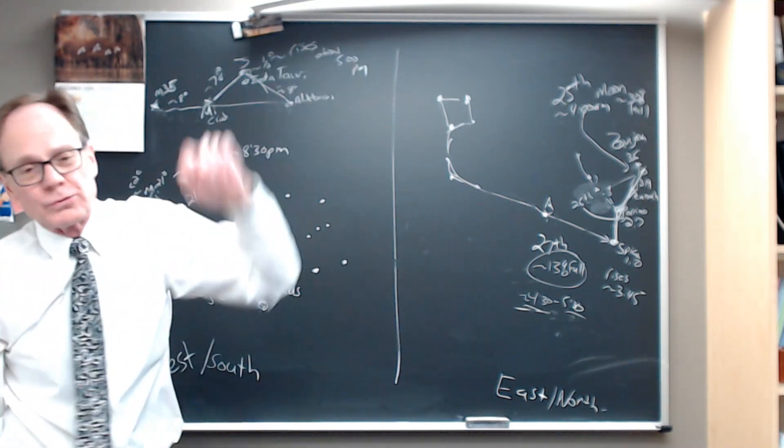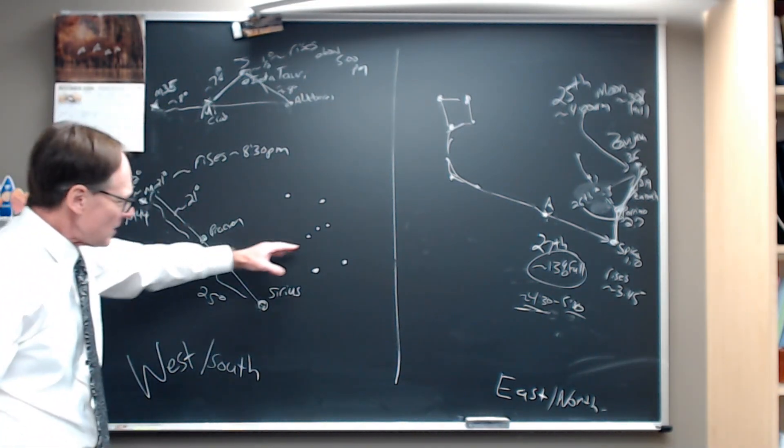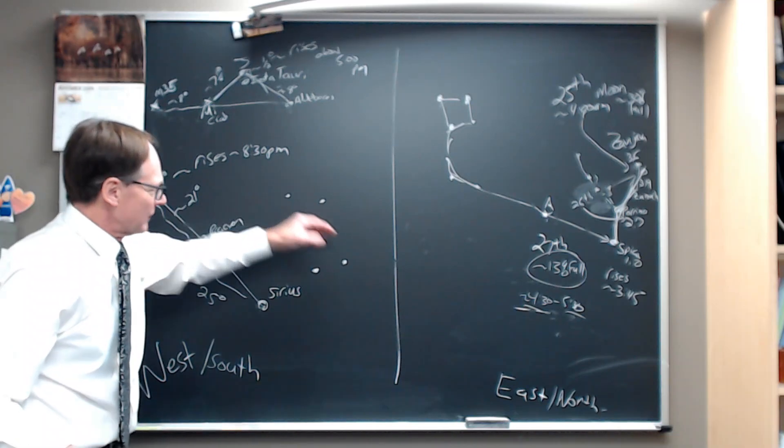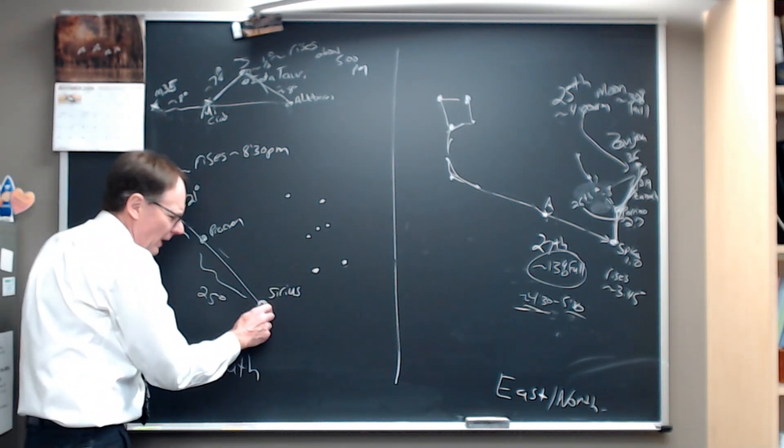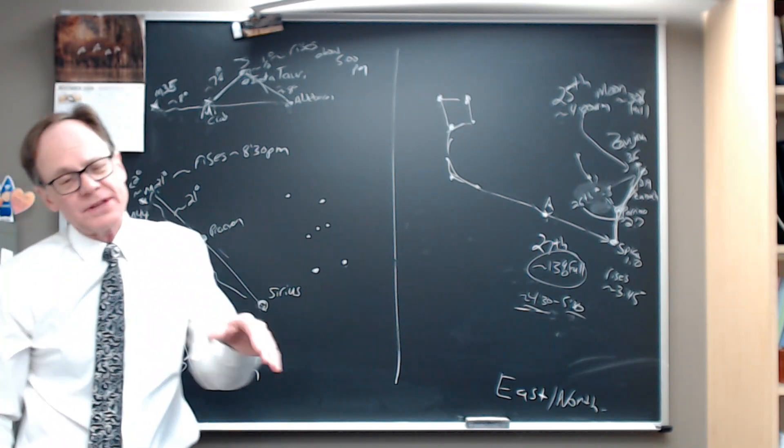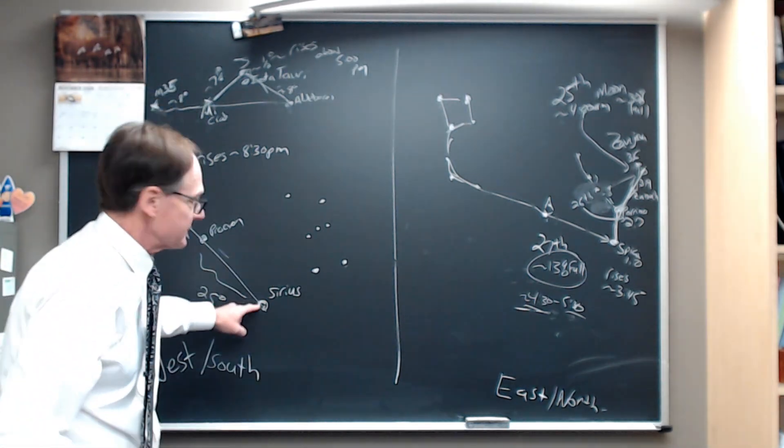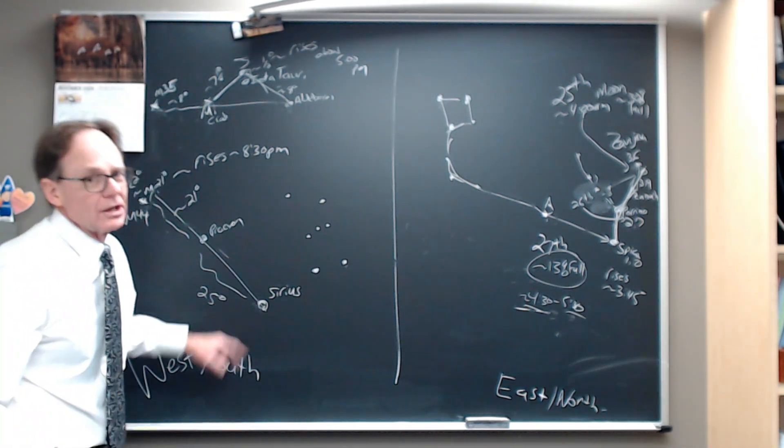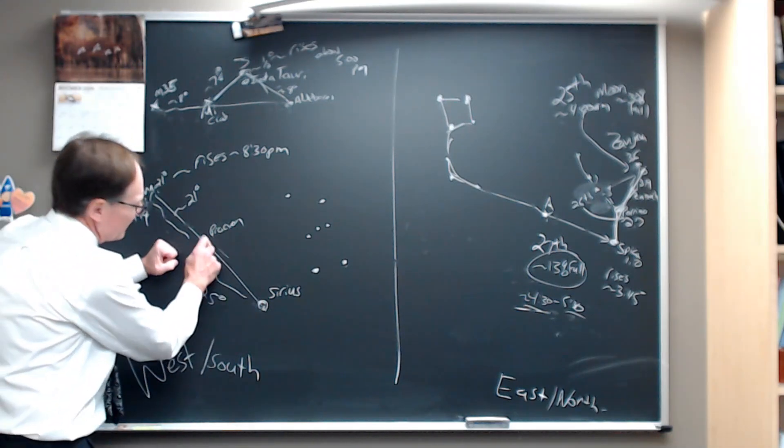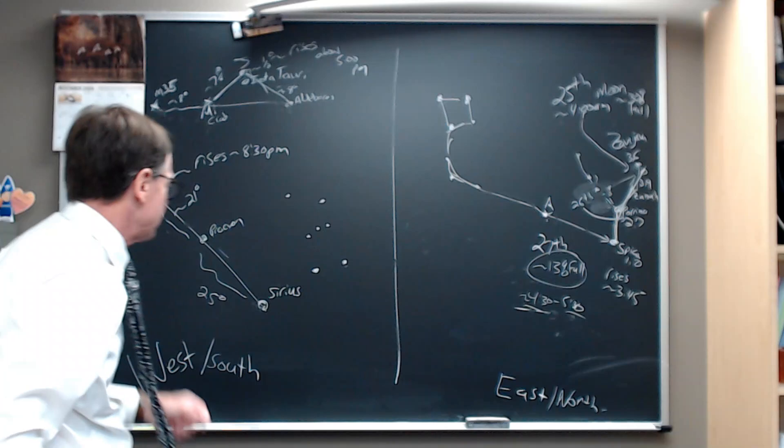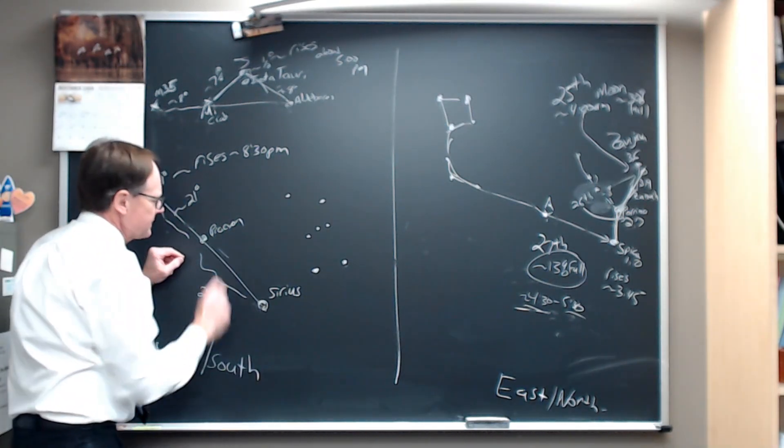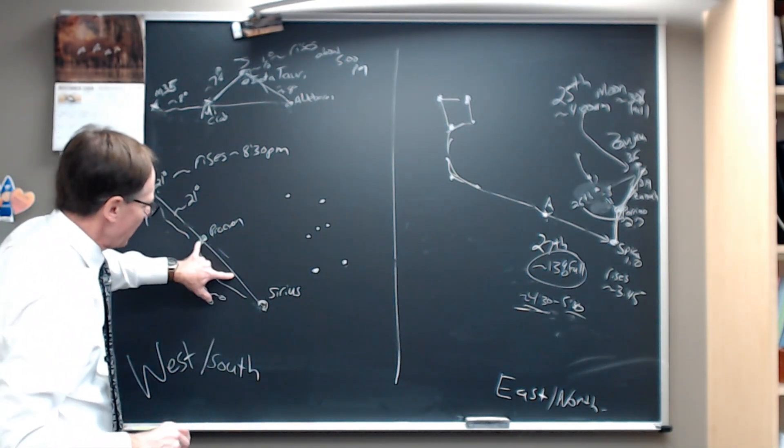If we swing further to the south as we're looking to the west, Orion is there. You've got Betelgeuse and Rigel, the big bright stars in Orion. But below and behind Orion, to the south and to the east, is Sirius, the brightest star in the sky. You move about 25 degrees up and you've got another fine bright star, Procyon. Canis Major, Canis Minor. Two big bright stars.